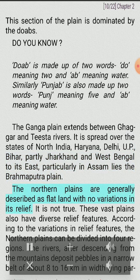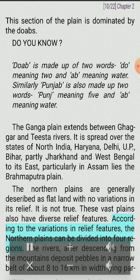The northern plains are generally described as flat land with no variations in its relief, but that is not true. These vast plains also have diverse relief features. According to the variations in relief features, the northern plains can be divided into four regions.